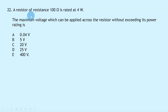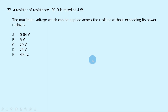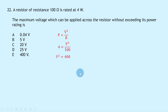Question 22 says a resistor of 100 Ω is rated at 4 watts. The maximum voltage without exceeding the power rating is? Using P = V²/R: 4 = V²/100, so V² = 400, giving V = 20 volts, which is answer C.